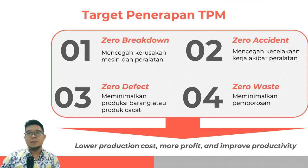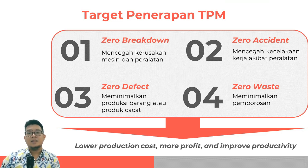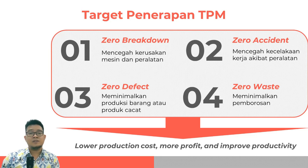Waktu downtime berarti waktu yang hilang akibat mesin ataupun peralatan kerja yang mengalami kerusakan, dan TPM dilakukan untuk mengurangi terjadinya downtime sehingga tidak mengganggu waktu produksi. Terdapat empat target utama dari penerapan TPM. Yang pertama adalah Zero Breakdown, yaitu mencegah kerusakan peralatan dan mesin. Yang kedua adalah Zero Accident, yaitu meminimalkan ataupun mencegah kecelakaan kerja akibat peralatan yang mengalami kerusakan. Yang ketiga adalah Zero Defect, yaitu meminimalkan produksi dari produk-produk yang cacat. Yang keempat adalah Zero Waste, yaitu meminimalkan pemborosan. Dengan penerapan TPM ini diharapkan kita akan memiliki biaya produksi yang lebih rendah, keuntungan lebih banyak, dan dapat meningkatkan produktivitas dari produksi.